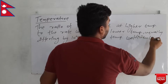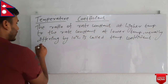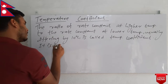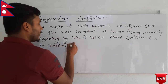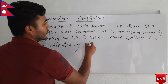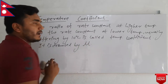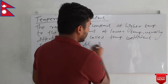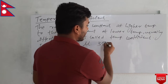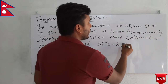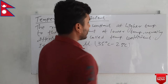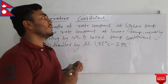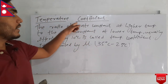Temperature coefficient is denoted by mu. Generally, this temperature range is considered to be from 35 degrees Celsius to 25 degrees Celsius. This is the temperature range, and this is the definition of temperature coefficient.